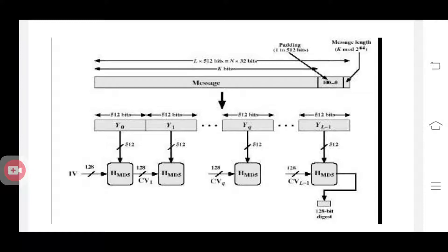After that, you can see in this figure: you have divided the whole message into 512-bit blocks — Y0, Y1 up to YL minus 1 — and each of these Y0, Y1, etc. contains only 512 bits. Then you process each 512-bit block using the MD5 algorithm. Y0 is the input to the first MD5, Y1 is the input to the next MD5 algorithm, up to YL minus 1 as the last input. You are processing 512-bit blocks at a time.